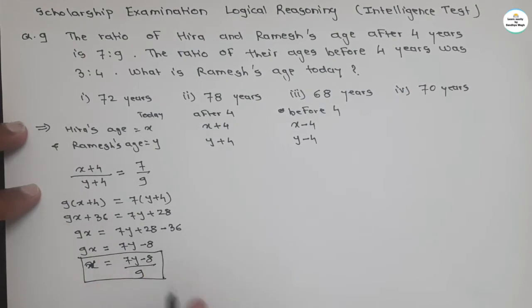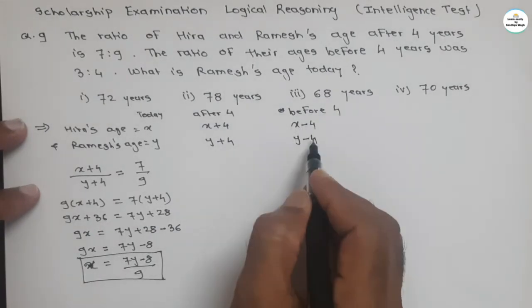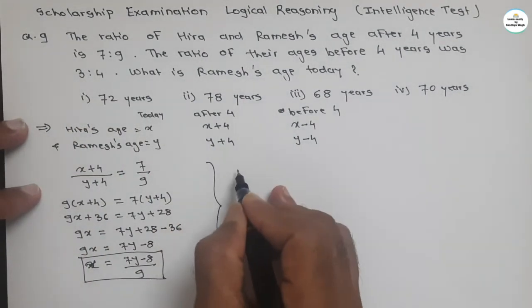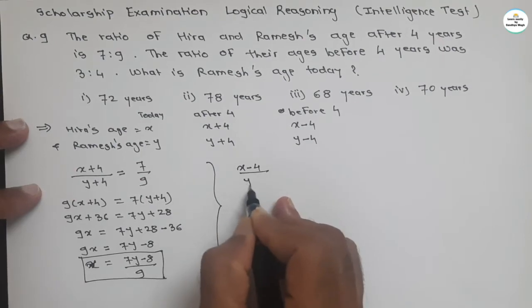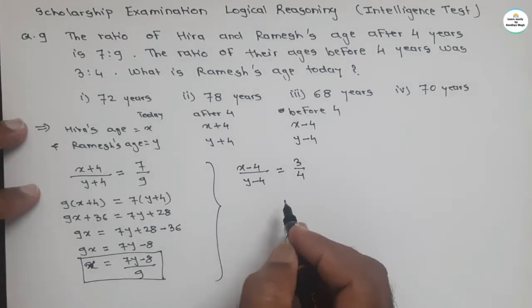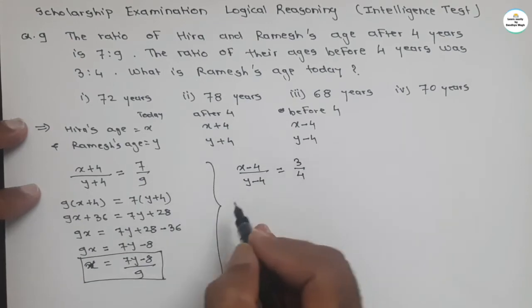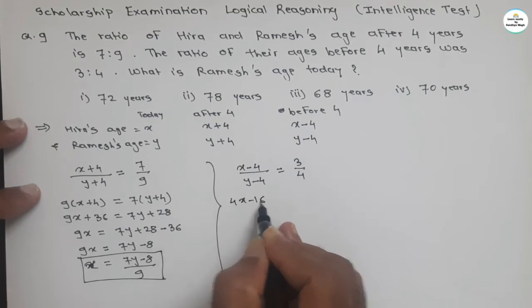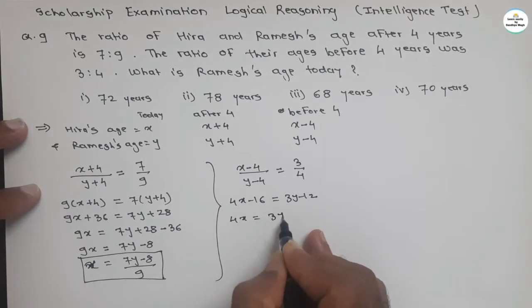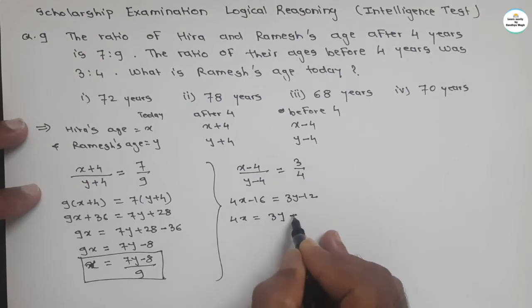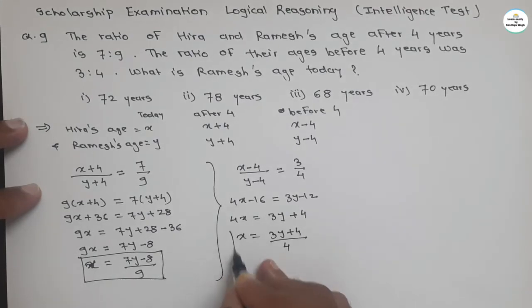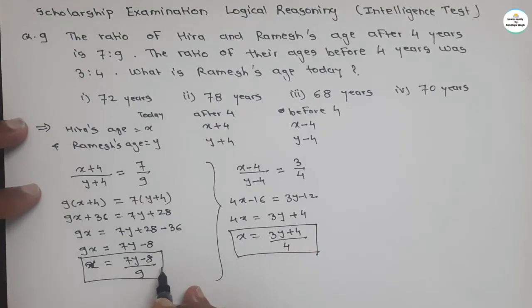Similarly, with the condition before 4 years — the ratio was 3 to 4 — write: X minus 4 upon Y minus 4 equals 3 to 4. The procedure is somewhat lengthy but clears the concept. Taking cross multiplication: 4X minus 16 equals 3Y minus 12, giving 4X equals 3Y plus 4, so X equals (3Y plus 4) divided by 4. Here also we got the value of X.